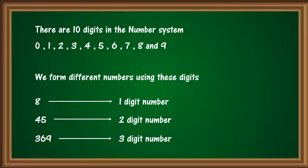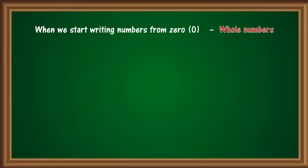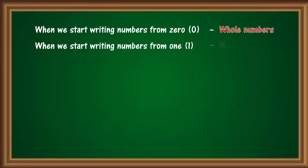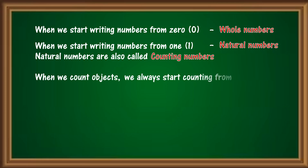Regarding numbers, we must remember that when we start writing numbers from 0, they are called whole numbers, and when we start writing numbers from 1, they are called natural numbers. Natural numbers are also called counting numbers. Why? Because when we count objects, we start counting from 1, not 0.